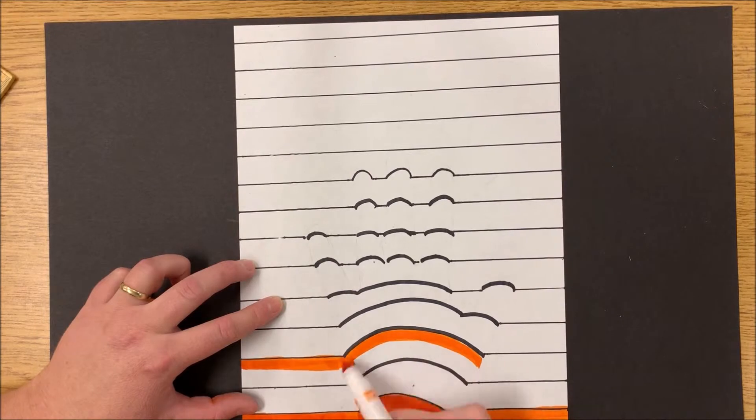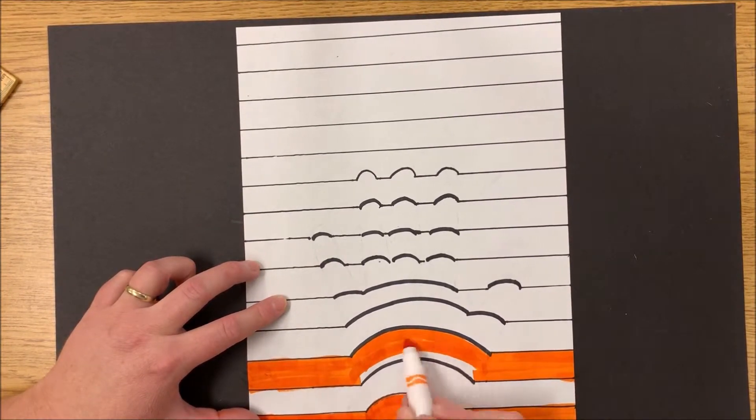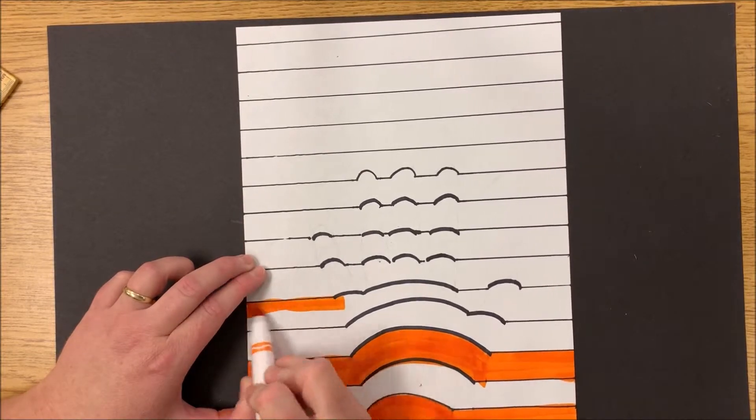I'm going to begin coloring in the hand. I'm going to choose light and dark colors and alternate every other line, coloring them in with the contour of the hand.